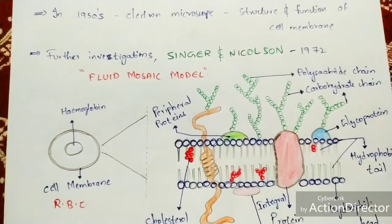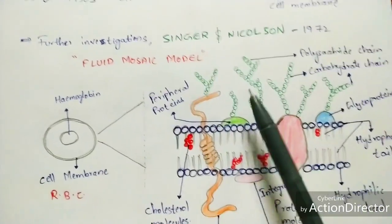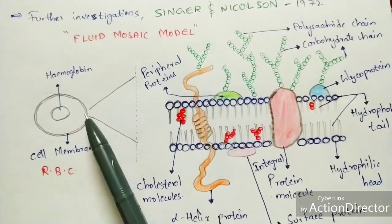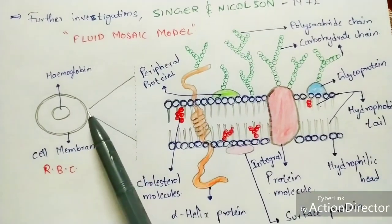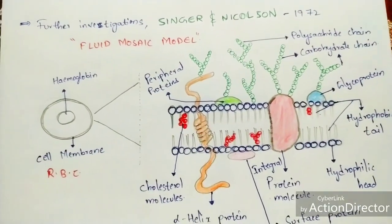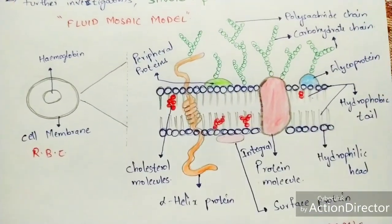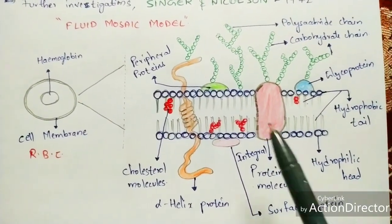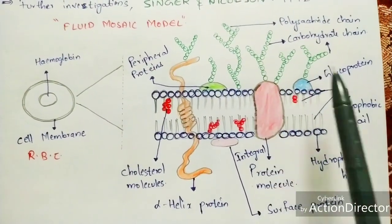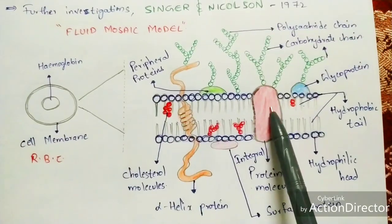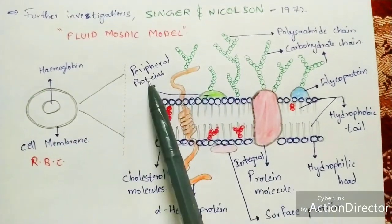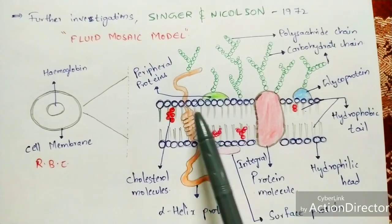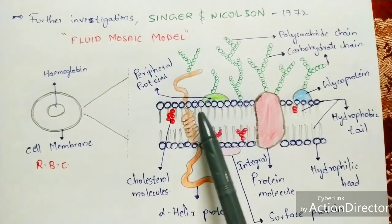When we zoom into that region, this is the diagram of the cell membrane as seen with the help of an electron microscope. This is just the zoomed region of the cell membrane of the red blood cell. Here, this is called the integral protein molecule, and this is called the peripheral protein molecule.